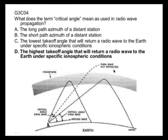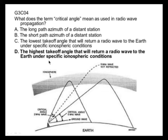This is frequency dependent. Under the same conditions, a 2 MHz signal launched at this angle will come back, but the 5 MHz signal launched at the same angle will keep right on going. The critical angle for 5 MHz is this angle right here — it's the highest takeoff angle that will return a radio wave to the Earth under specific ionospheric conditions.